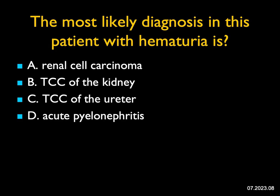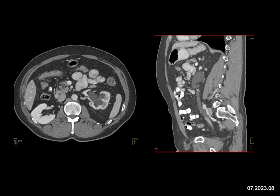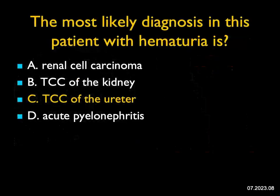The most likely diagnosis in this patient with hematuria — the right kidney looks pretty good, but the left kidney is obstructed. When you look carefully, you see a dilated ureter on the sagittal view, and very distally in the ureter there's soft tissue. That's not a stone — that's going to be an infiltrating process, a transitional cell carcinoma. So this is not a renal mass; it's a ureteral mass — a very nice example of a TCC of the ureter.